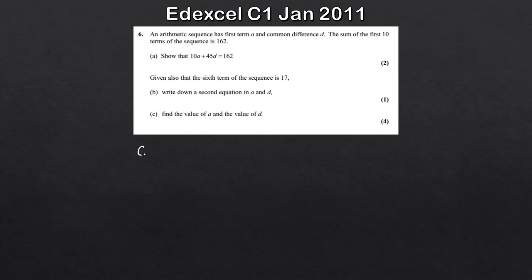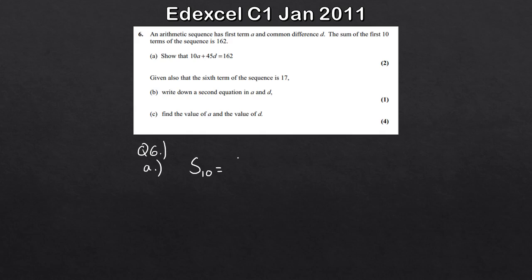The big giveaway for this question is that it's equal to 162 - we're told the sum of the first 10 terms of the sequence is 162. So what I'm going to do is set up the sum of the first 10 terms, that would be S10. We know the first term is A and the common difference is D, and we'll apply them where appropriate using the summation formula, which is given in your formula book.